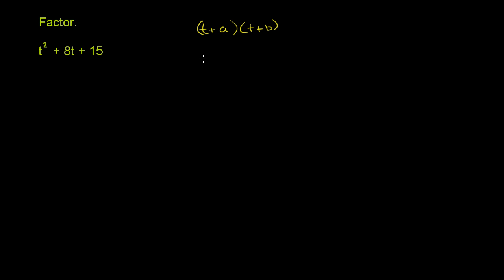So if you multiply this out, applying the distributive property twice, or using FOIL, you get t times t, which is t squared, plus t times b, which is bt, plus a times t, which is at, plus a times b, which is ab.